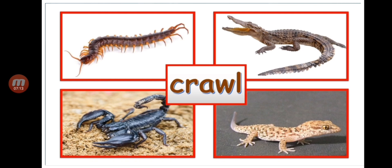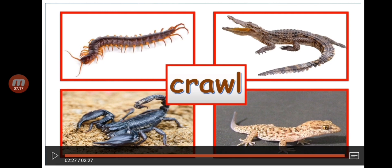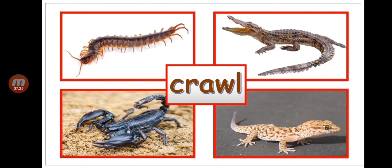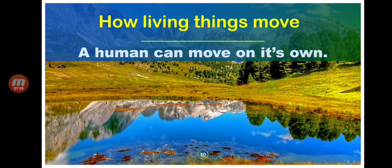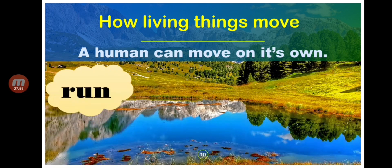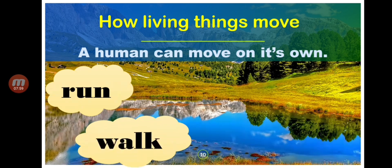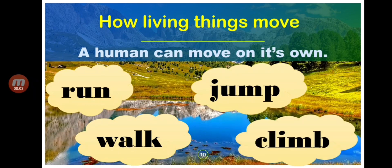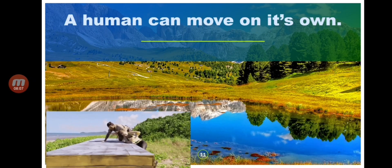That's all about how animals — or how living things — move. Now let's move to another example: a human can move on its own. When we say human, that is us — people, whether a girl or a boy. Humans can move on their own by running, walking, jumping, and climbing.